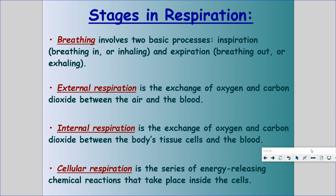Internal respiration is when you take the oxygen that is now circulating through your blood and pass it to your body's tissues, such as the muscles. Once the muscles get it, then there's cellular respiration, which is essentially the building and making of ATP.